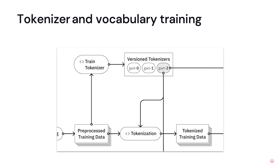Now I'll zoom in to the tokenizer and vocabulary training part of the pipeline. This is the process where you have some pre-processed training data — you've already been through all the steps we just discussed — and now you want a tokenizer with a custom vocabulary. You're then going to take that tokenizer and tokenize your processed training data before you feed it into the model.